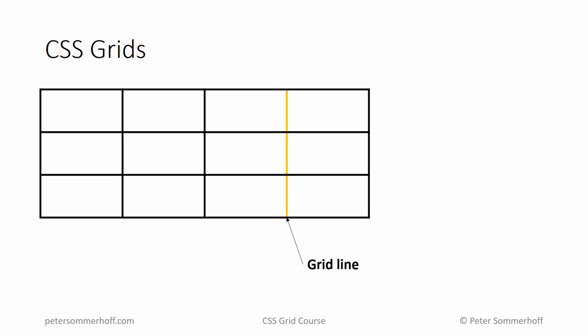Now with the grid lines defined, we can also define what a grid track is, because it's defined as the area between two grid lines. So effectively, a grid track is going to be one or more rows or columns. In this case, you can see that the grid track here is just a row in the grid. It might also be a column, or it could also be two rows, but it's just the area between two grid lines.